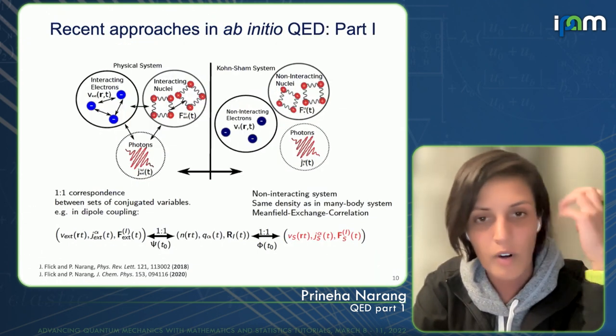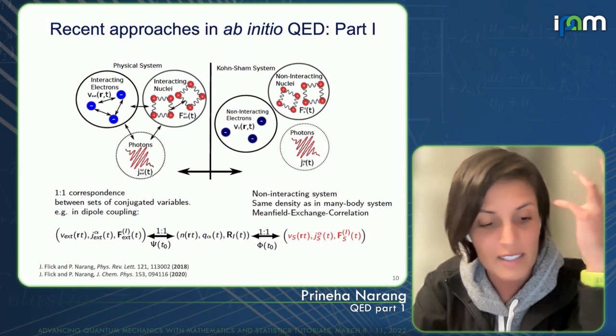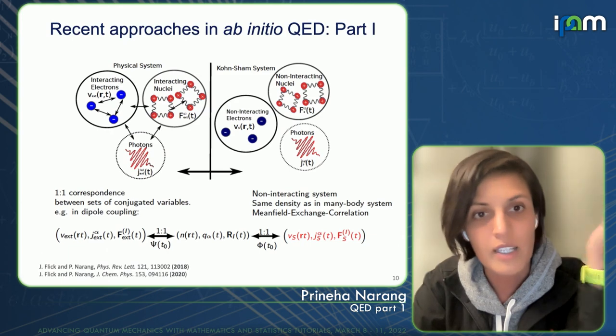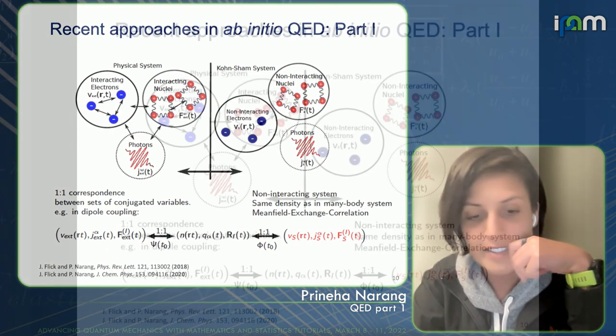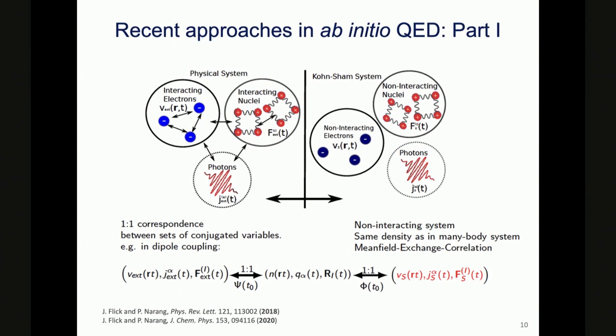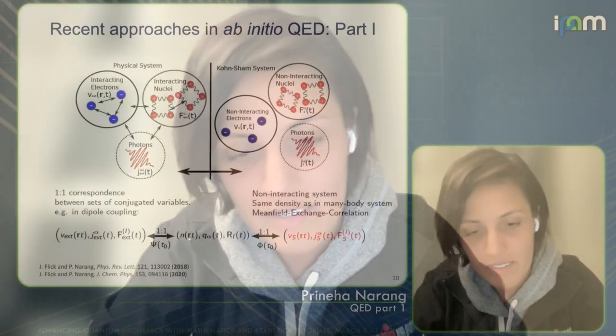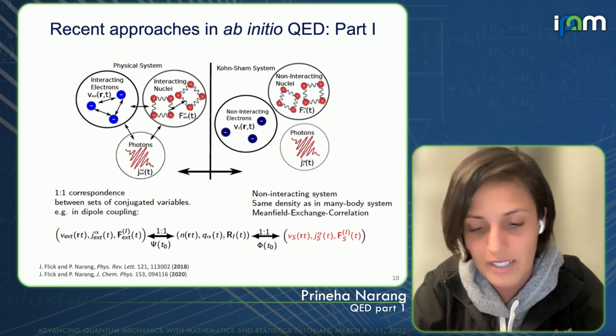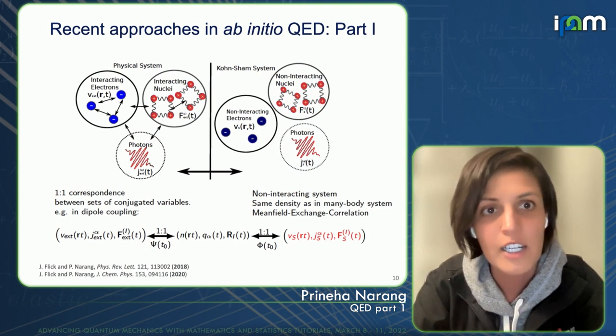Our first foray into QED electronic structure theory was introducing nuclei into the problem. One reason is that some of the observables and debates in the field were around vibrational strong coupling — reports that folks had been able to use a cavity to couple to specific vibrational modes and that this was responsible for changes in chemical dynamics. The other reason to include nuclei is that it naturally lets us get finite-temperature effects into our calculations.